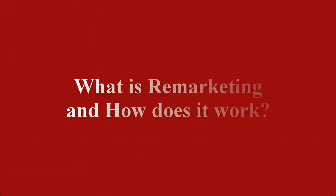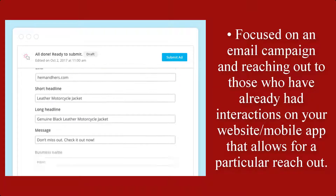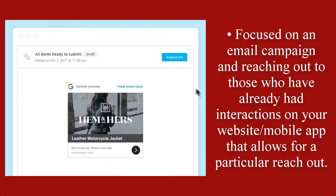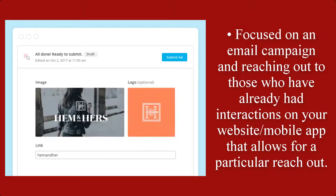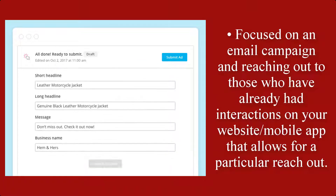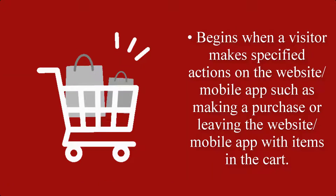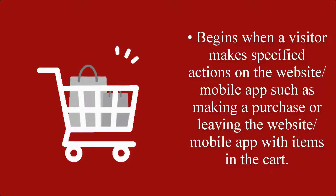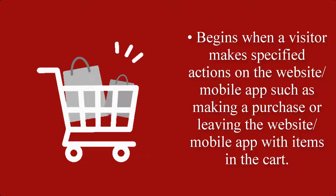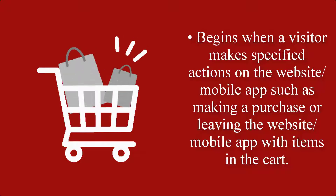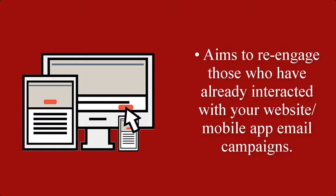First, let's talk about what is remarketing and how does it work. First, it is focused on email campaigns and reaching out to those who have already had interactions on your website or mobile app. Second, it begins when a visitor makes specified actions on the website or mobile app, such as making a purchase or leaving with items in the cart. And third, it aims to re-engage those who have already interacted with your website or mobile app.